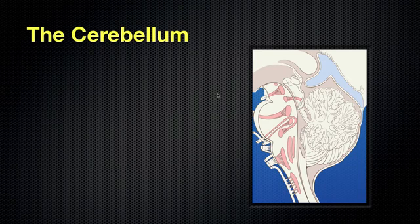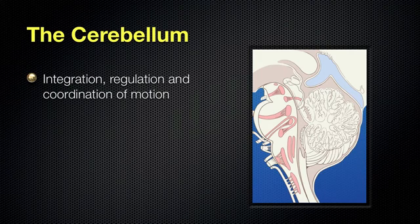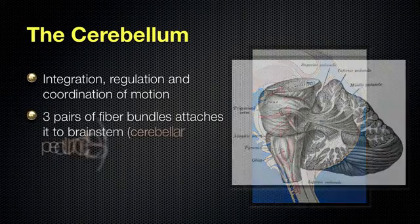Just to recap: cerebellum, it's Latin for little brain, so it looks like a little brain at the back and bottom of the brain — posterior and inferior — that's where the cerebellum is located. The functions of the cerebellum involve integration, regulation, and coordination of motion. So if you want to move your arm or some part of your body, the cerebellum is very much involved in integrating the signals, regulating what's going on, and coordinating that motion.